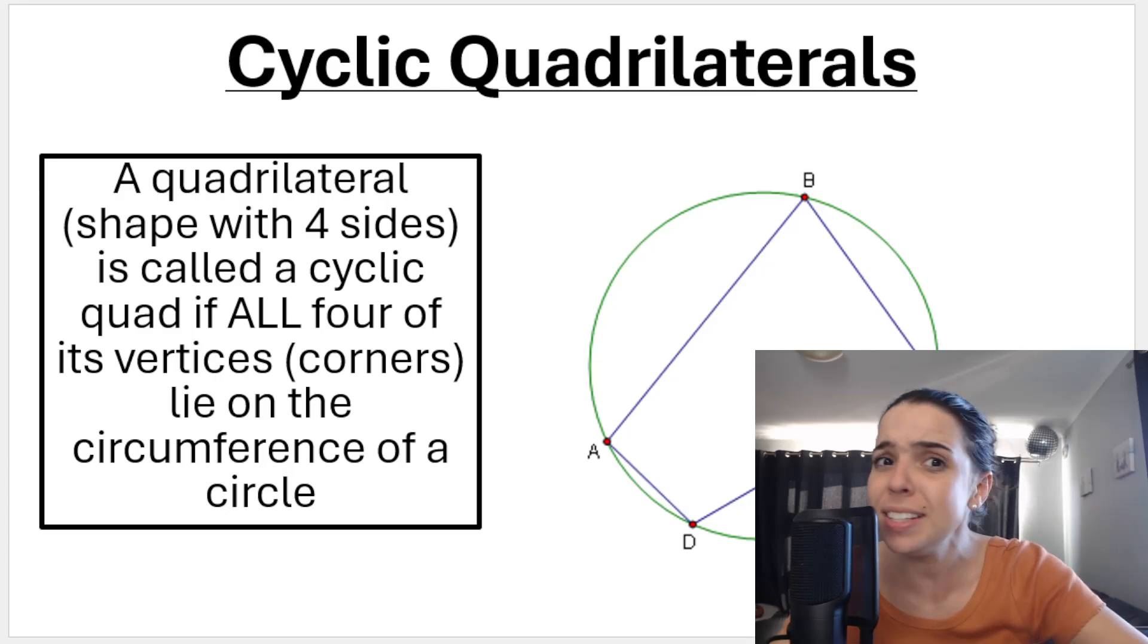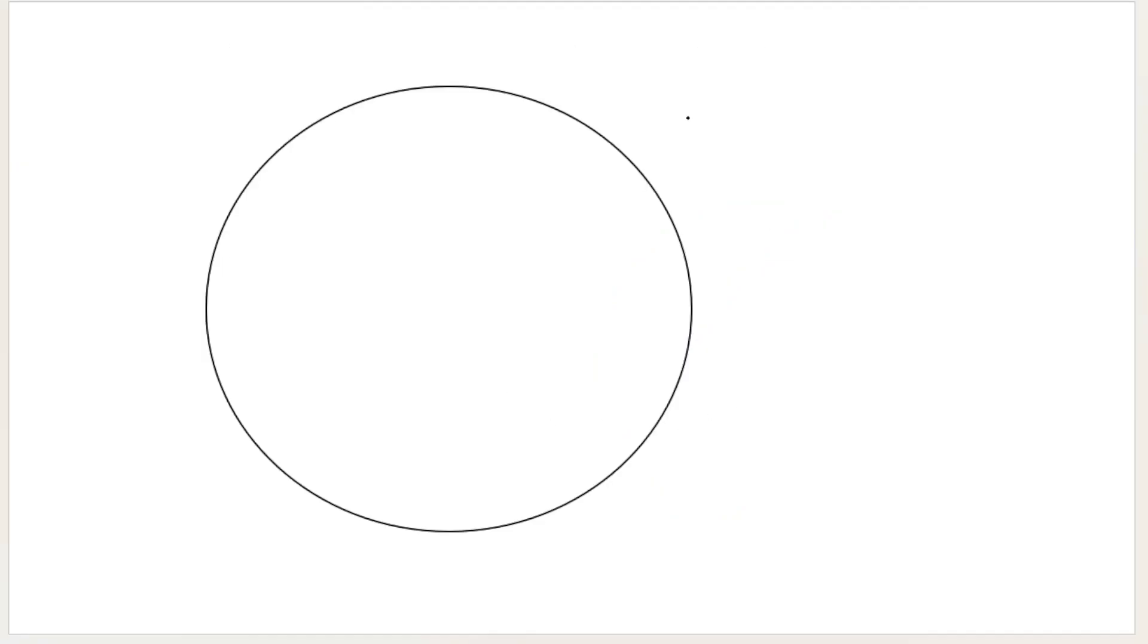But first, what is a cyclic quad? If I give you a circle like that and I draw a four-sided shape, a quadrilateral, and I make sure that the corners, the vertices of this quadrilateral, touch the circumference of the circle. So you can see this corner is sitting on the circumference, this corner is sitting on the circumference, and this corner at the top and this corner at the top. They're all sitting on the circumference.